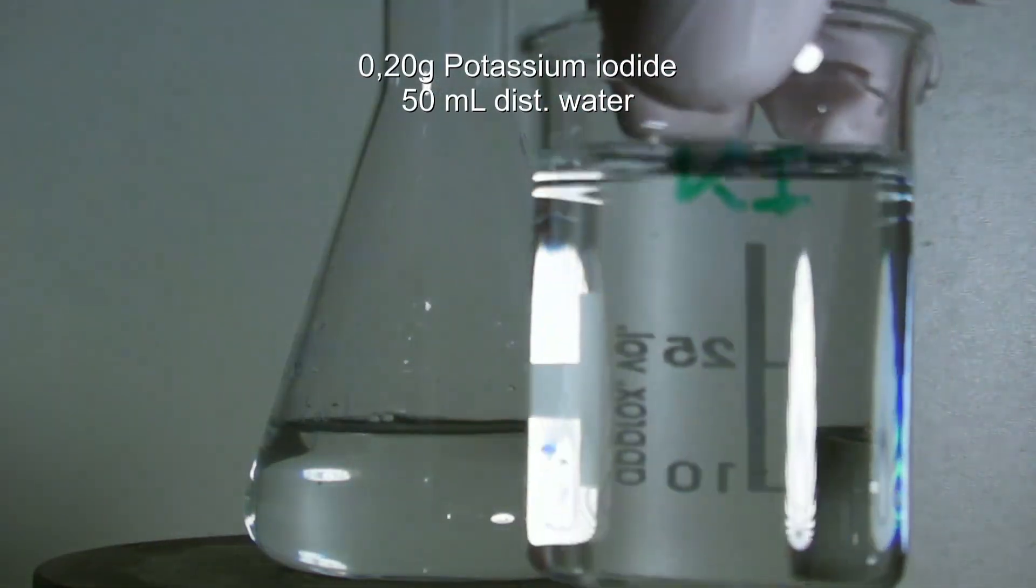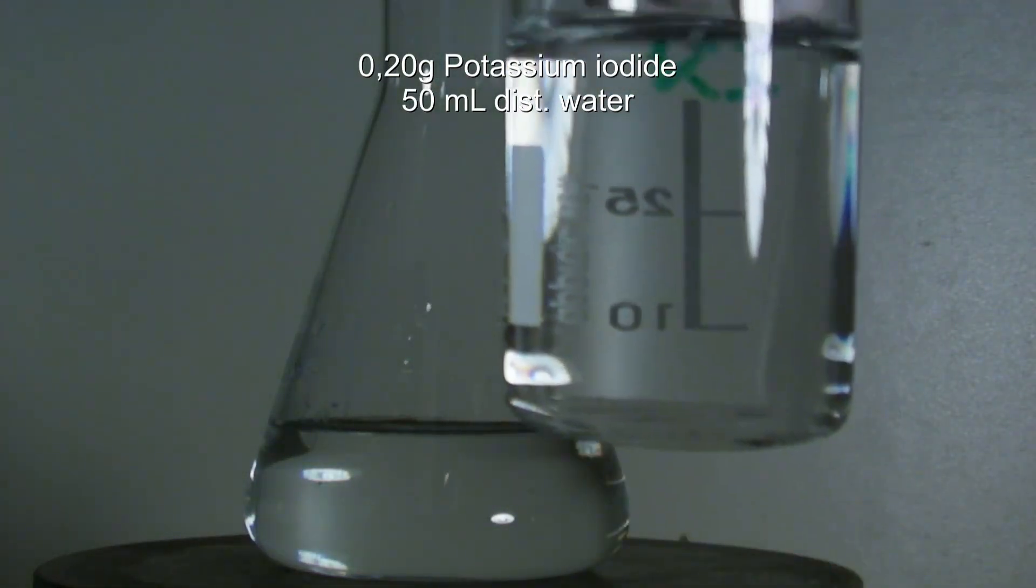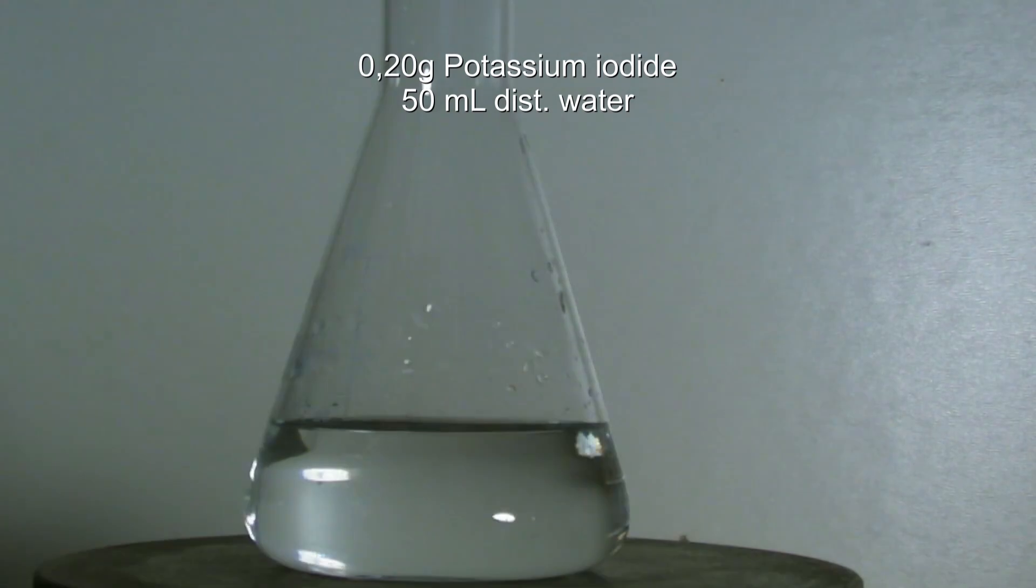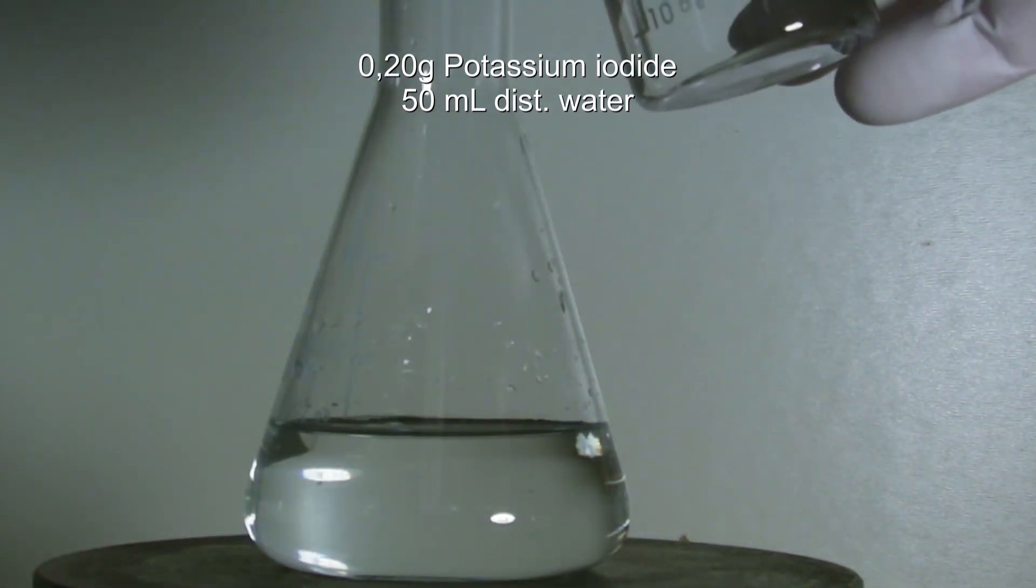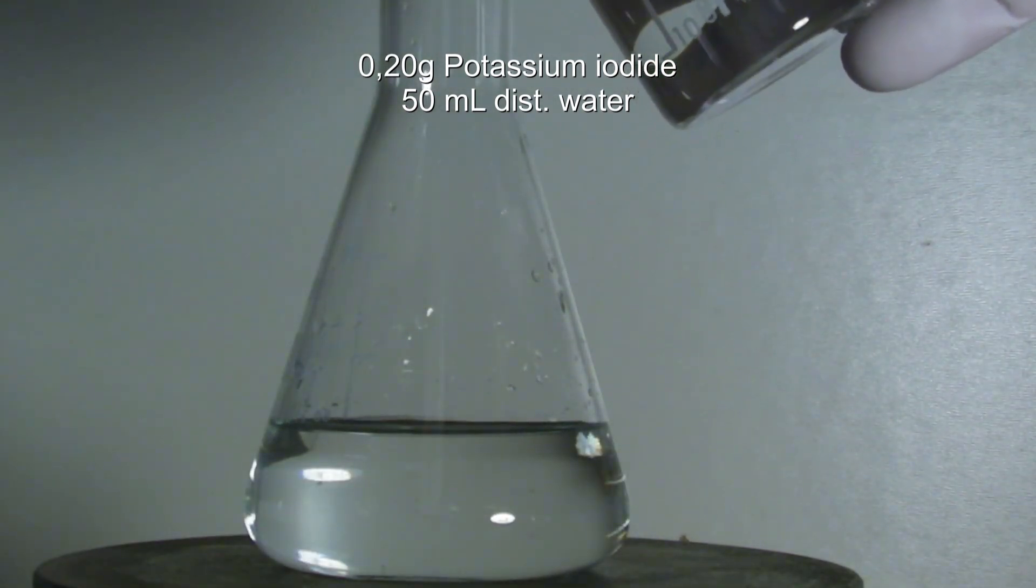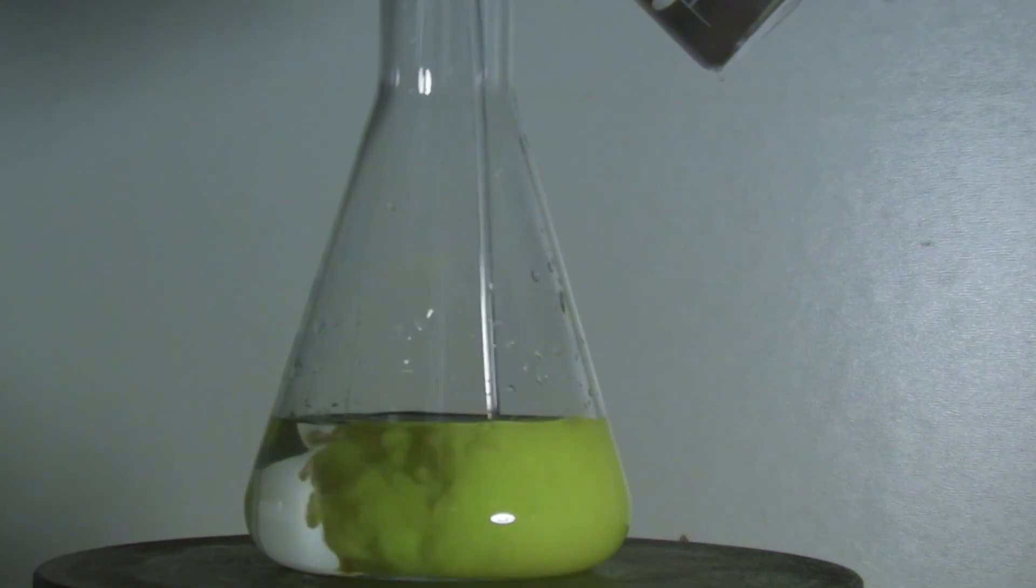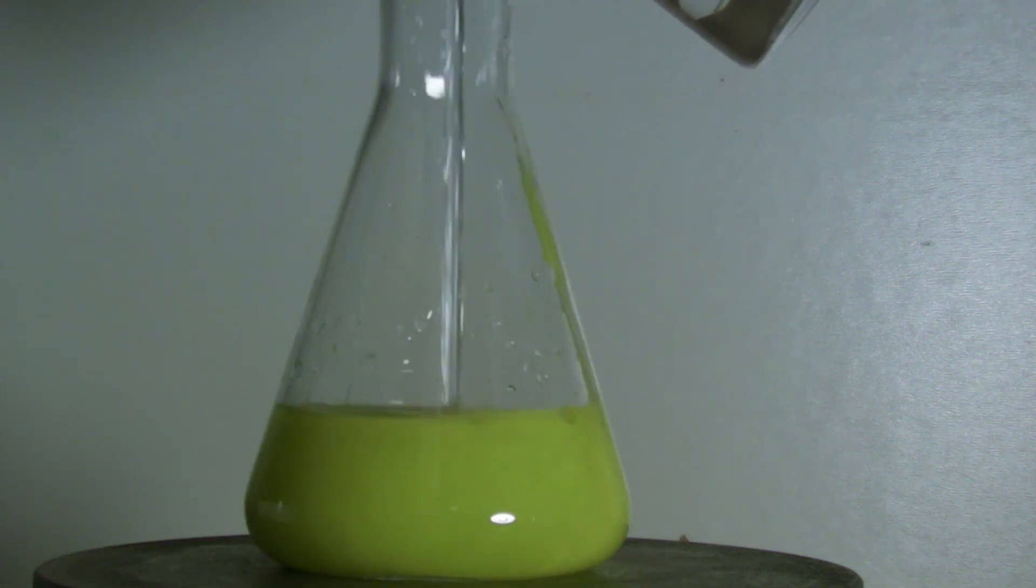Then a solution made of 0.2 grams of potassium iodide and 50 milliliters of distilled water is added. At this point, another 10 milliliters of water could be added because it was needed later on.